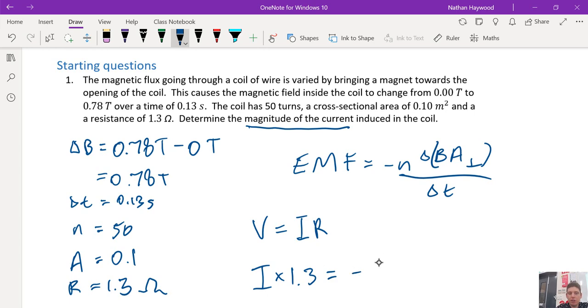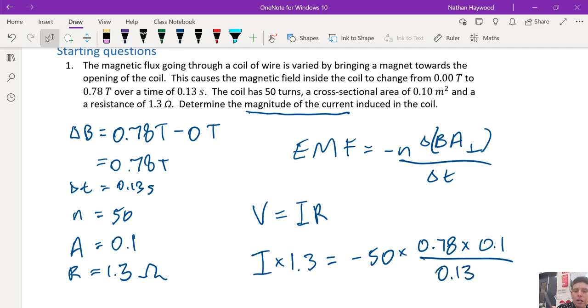Equals number of turns, 50, times change in B, 0.78, times the area in meters squared, divided by the time. So if we divide this by this, we get the current.